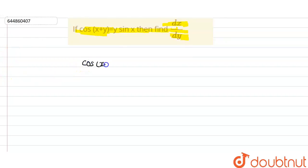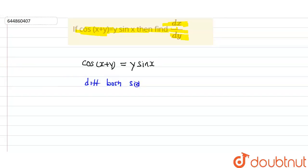Given is that cos(x + y) = y·sin(x). We need to differentiate both sides with respect to x.